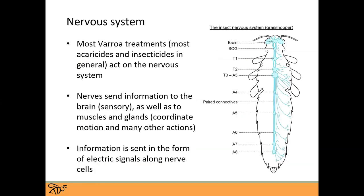Before I talk about the treatments, I'll go over the mode of action for how they work — how they actually kill the mites. Most Varroa treatments — most acaricides and insecticides in general — are going to act on the nervous system. What you can see is the nervous system of a grasshopper, but it looks very similar in a bee and relatively similar in a mite as well, regardless of which arthropod we're talking about.